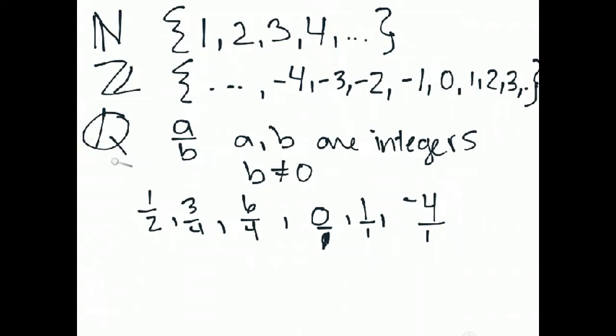The numbers that are not rational are just called irrational. Irrational numbers have no symbol, but they are numbers such as pi and E, and they cannot be written as a ratio of two integers. Furthermore, they do not have a repeating decimal. If you look at the decimal equivalent of pi, it goes on and on forever with no pattern indicated in it.